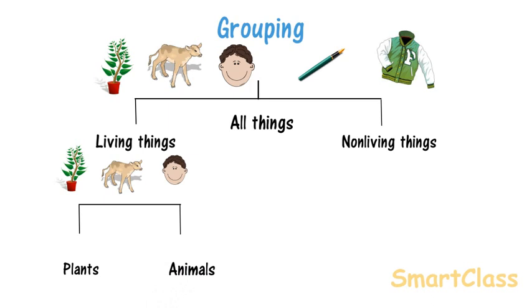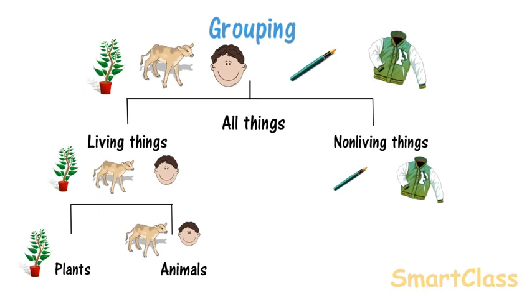This is because plants and animals are different in the way they live, eat, move, and reproduce. Both plants and animals are further divided into smaller groups. We will study about them in higher classes.